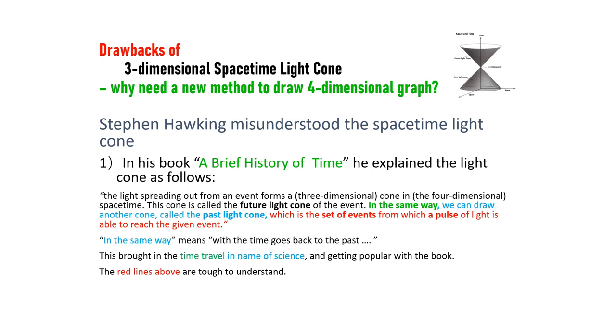Stephen Hawking misunderstood the spacetime light cone. First, in his book A Brief History of Time, he explains the light cone as the following: The light spreading out from an event forms a three-dimensional cone in the four-dimensional spacetime. This cone is called the future light cone of the event. In the same way, we can draw another cone called the past light cone. In the same way means when the time goes back to the past. This brought in the time travel in name of science and getting popular with this book. The red lines above are tough to understand.